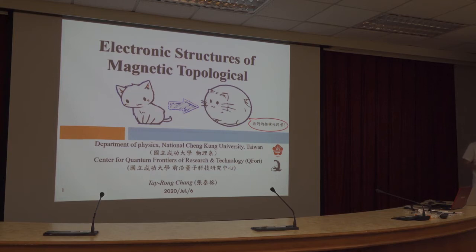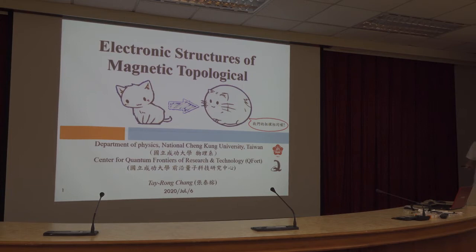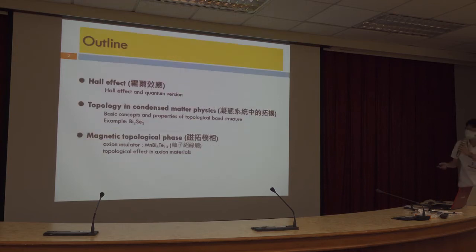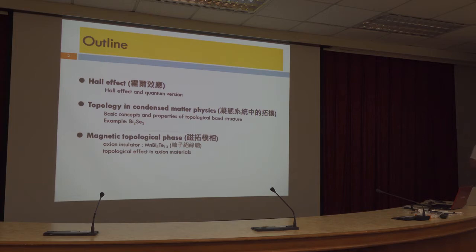In this talk, I would like to give you a simple basic picture of what is a topological material and what we are working on without complicated math equations. This approach may not be very rigorous, but I think it is very simple. This is the outline of today's talk. Let's start from the Hall Effect, because the quantum version of Hall Effect is a flexible platform to realize dissipationless current. This is also one of the major goals of why we have to study topological materials.